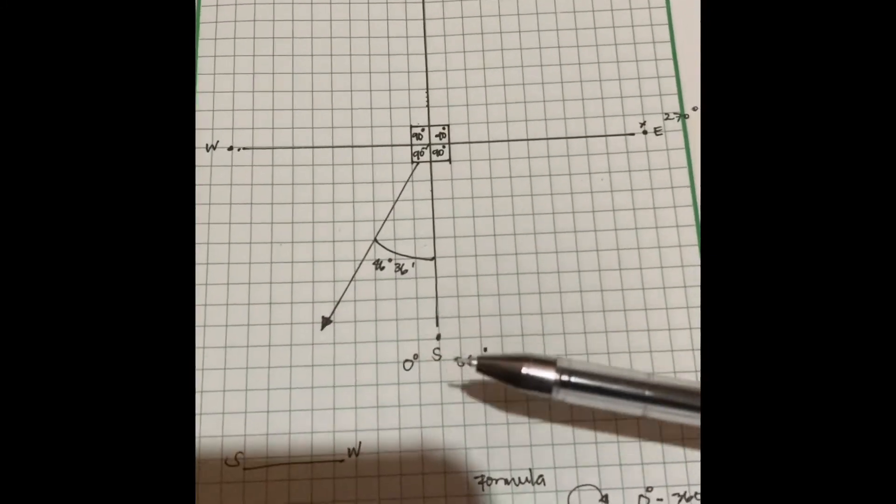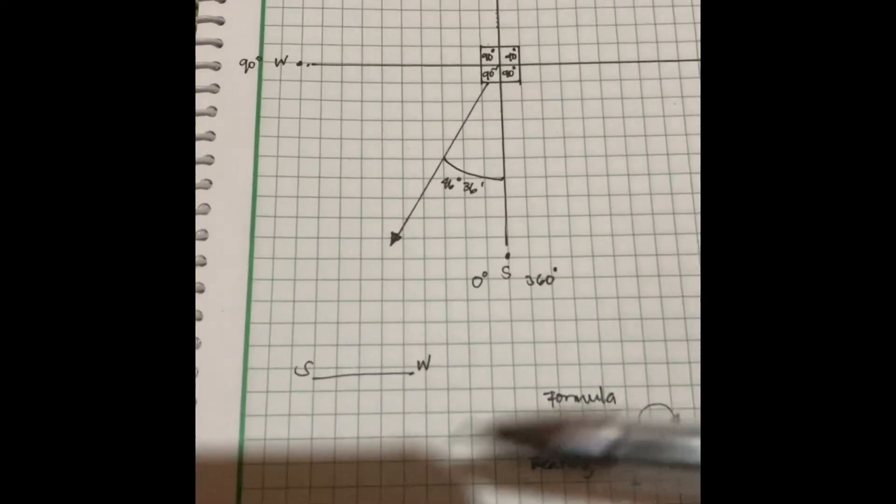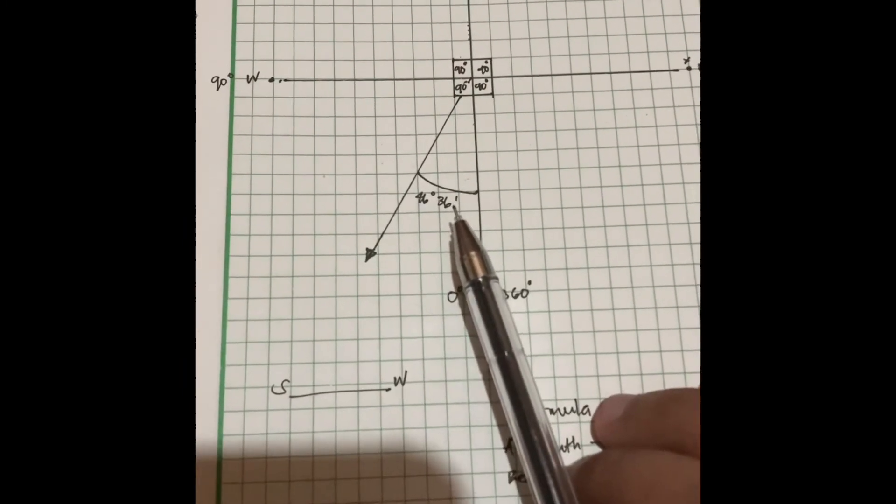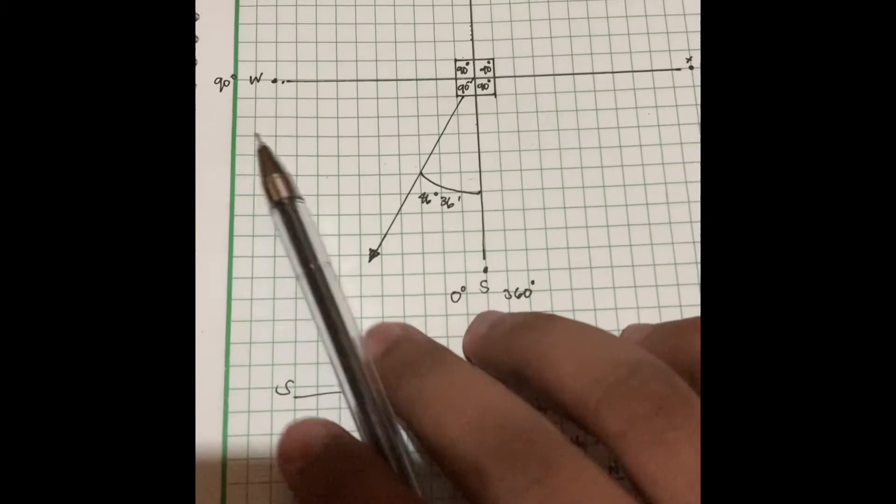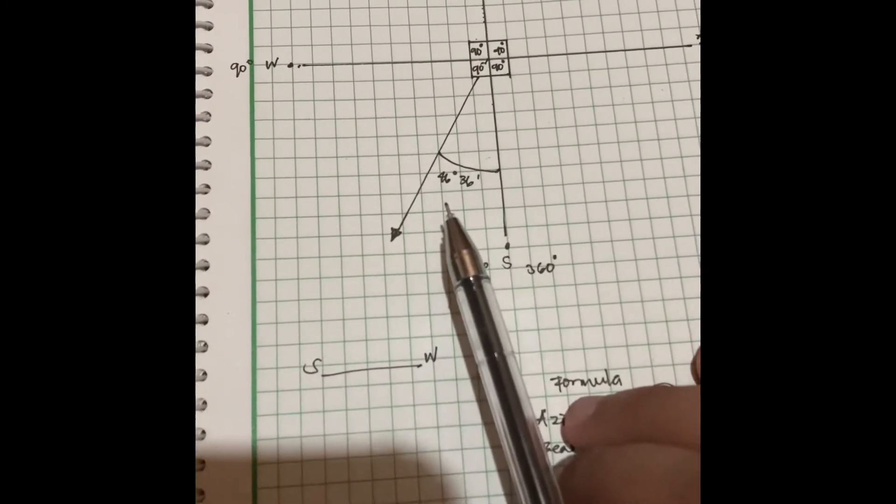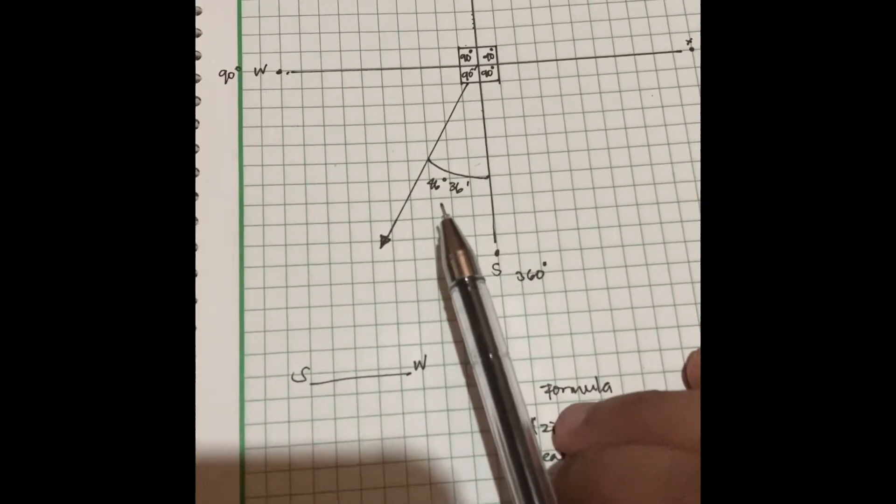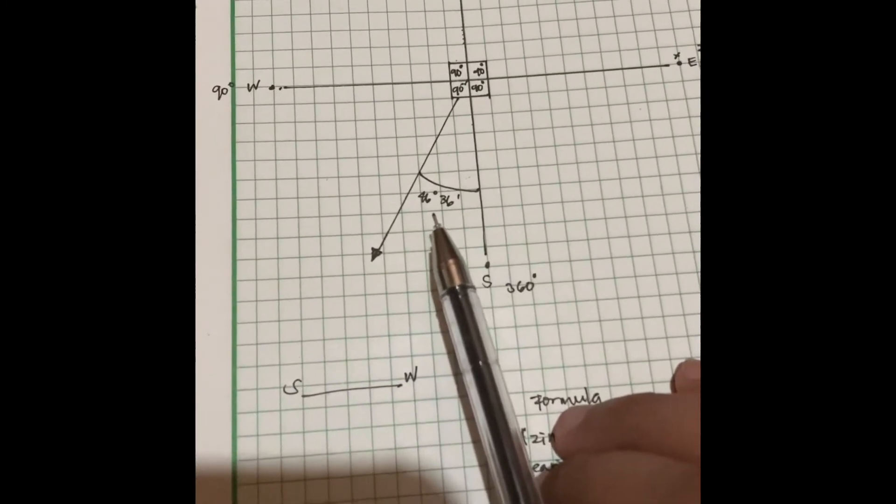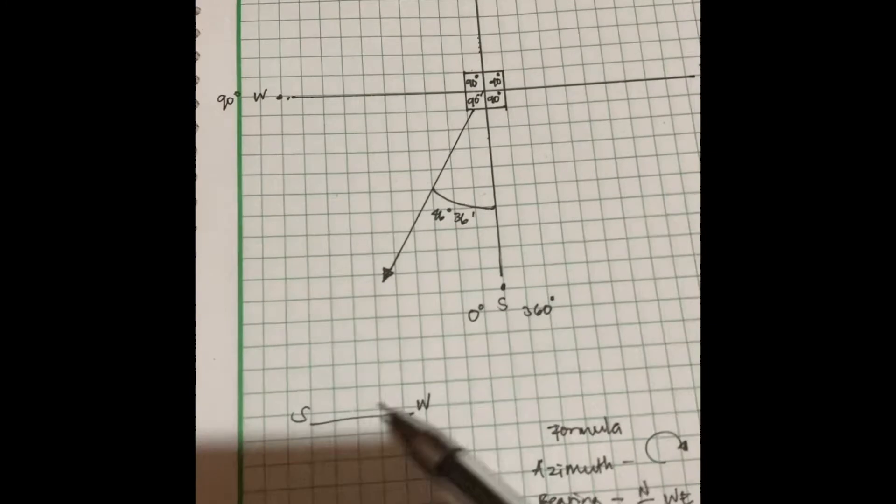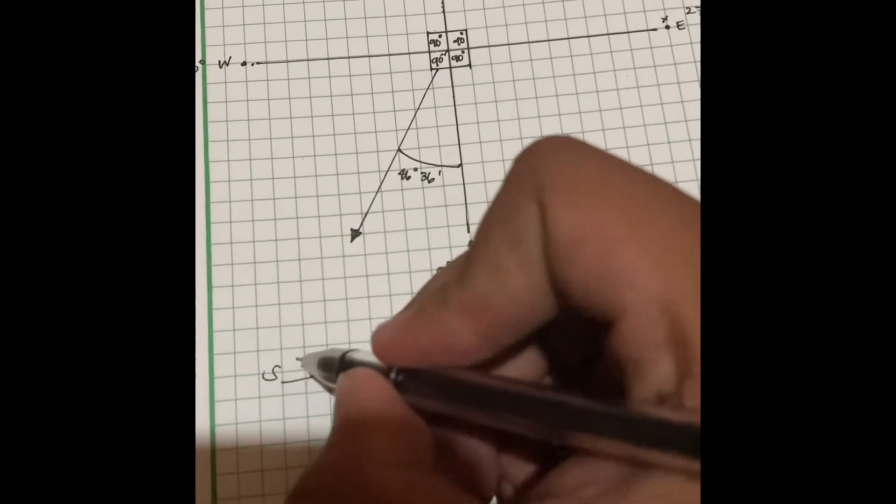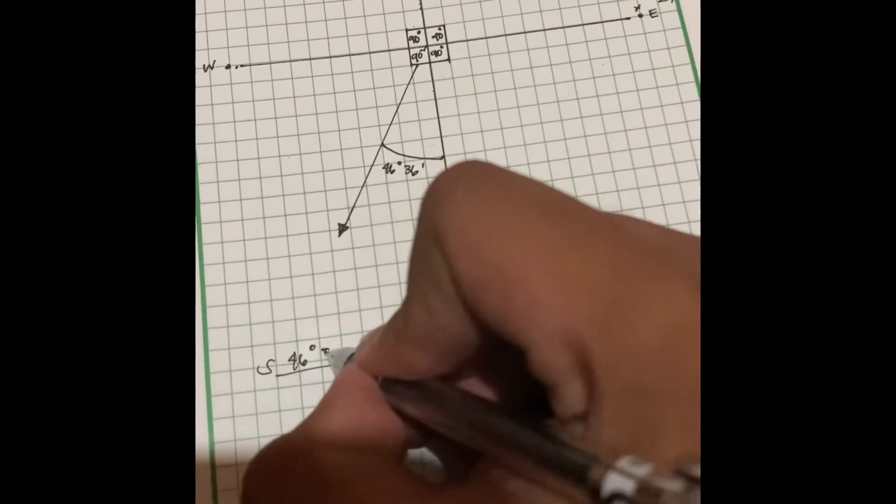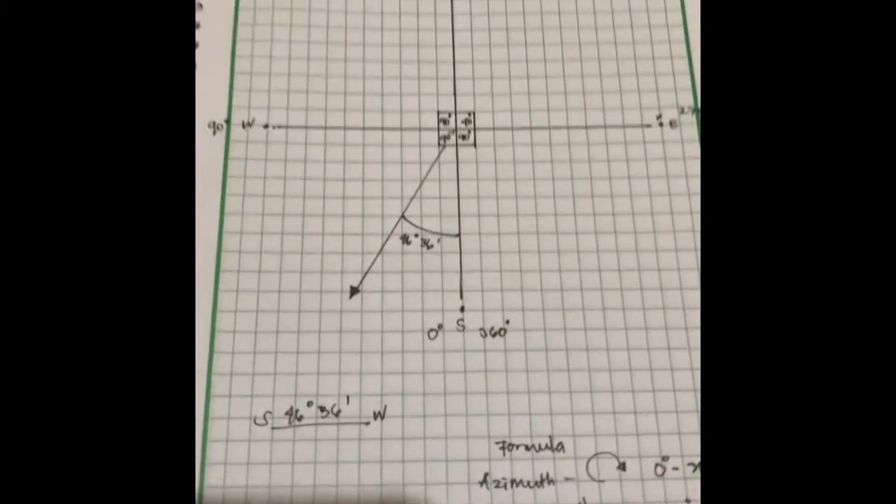To find the bearing from south to west, since the location is in the first quadrant at 90 degree angle, the bearing is the same as the azimuth: 46 degrees and 36 minutes.